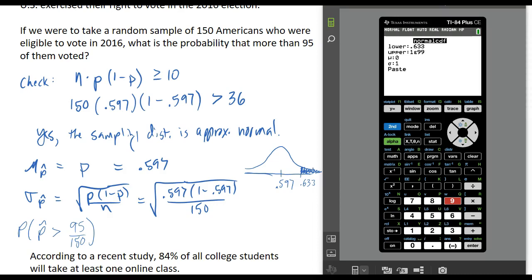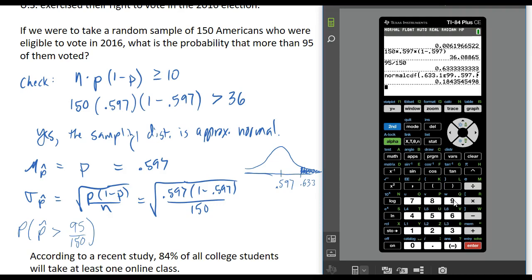We'll use 0.633 as our lower, and we'll use infinity as our upper bound. Our mean is 0.597, and our standard deviation is the square root of 0.597 times 1 minus 0.597 divided by 150, and that is going to give us 0.184. So my answer is approximately 0.184, meaning there's about an 18% chance that our sample of 150 Americans will result in more than 95 that actually voted. So that would be my probability.